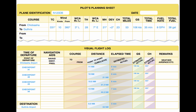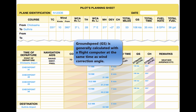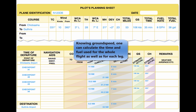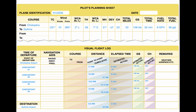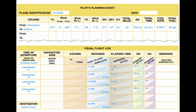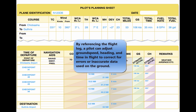Now, the ground speed (GS) can be determined using a manual or electronic calculator. The GS is determined to be 106 knots. Based on this information, the total trip time, time between checkpoints, and fuel burned can be determined. For this trip, the GS is 106 knots and the total time is 35 minutes — 30 minutes plus 5 minutes for climb — with a fuel burn of 4.7 gallons. Refer to the flight log for the time between checkpoints. As the trip progresses, the pilot can note headings and time, and make adjustments in heading, GS, and time.